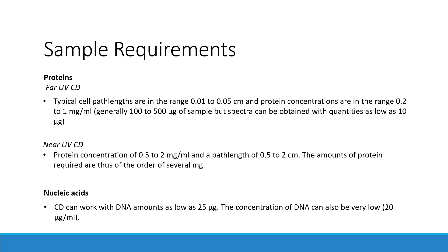Regarding sample requirements for circular dichroism assays, if you want to obtain CD spectra of proteins in the far UV region, typical cell path lengths are in the range of 0.01 to 0.05 cm and protein concentrations are in the range of 0.2 to 1 mg per milliliter, generally 100 to 500 micrograms of sample, but spectra can be obtained with quantities as low as 10 micrograms. In the near UV region, protein concentrations of 0.5 to 2 mg per milliliter are needed with a path length of 0.5 to 2 cm, and the amounts of protein required are thus of the order of several mg. For nucleic acids, CD can work with DNA amounts as low as 25 micrograms, and the concentration of DNA can be as low as 20 micrograms per milliliter.